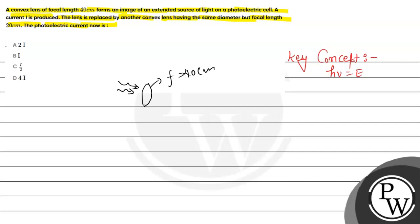According to the question, it forms an image of an extended source of light on a photoelectric cell. If we have a photoelectric cell, then it has a particular current value. The current amount is equal to I.